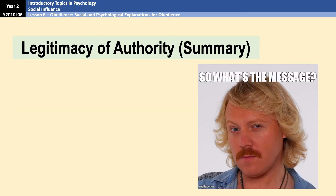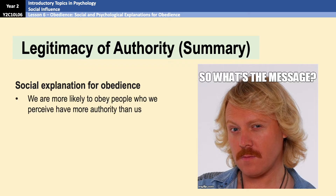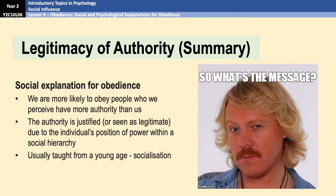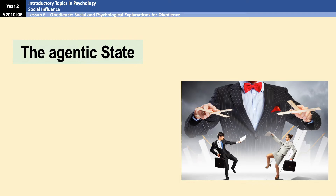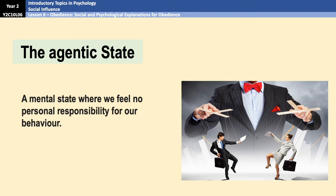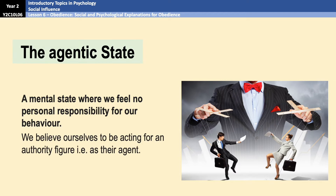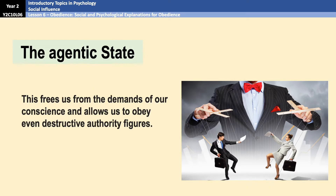That was the first section — it's summarized on screen so you can see the important bits. The exam practice video mentioned earlier will go through example questions and show you how to formulate answers. Moving on to the second part: the agentic state is a mental state where we feel no personal responsibility for our behavior because we believe we are acting on behalf of an authority figure — we are acting as their agent.